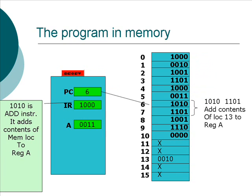Now the program counter increments to memory location 6. The contents of memory location 6 is 1, 0, 1, 0 — that gets loaded into the instruction register. The instruction register should say 1, 0, 1, 0. The processor interprets that as an ADD instruction. But this time, instead of taking the contents of the next memory location as a value, it takes it as a memory address. So the contents of the next memory location, number 7, is 1, 1, 0, 1.